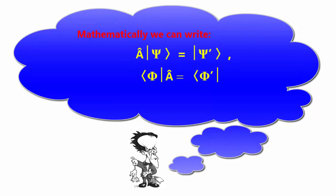Mathematically we can write: A|ψ⟩ = |ψ'⟩, and ⟨φ|A = ⟨φ'|.